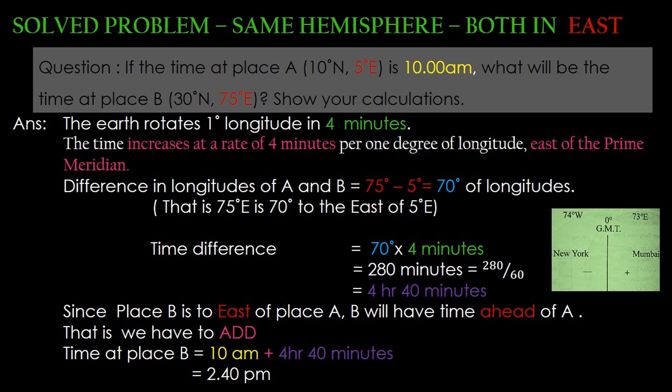Since place B is to the east of place A, place B has the time ahead of A — that is, we have to add. So time at place B is equal to 10 am plus 4 hours 40 minutes, which is equal to 2:40 pm.